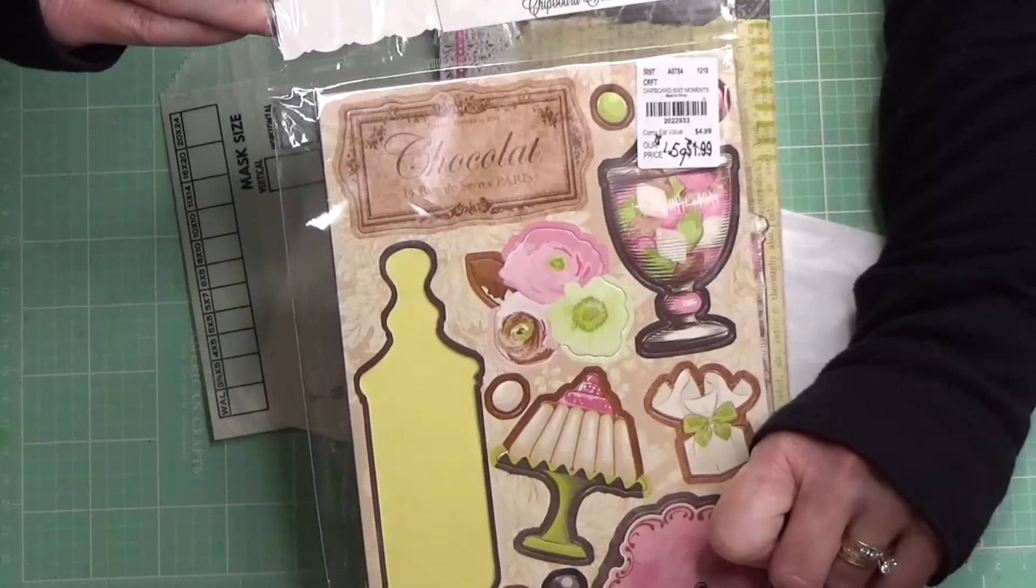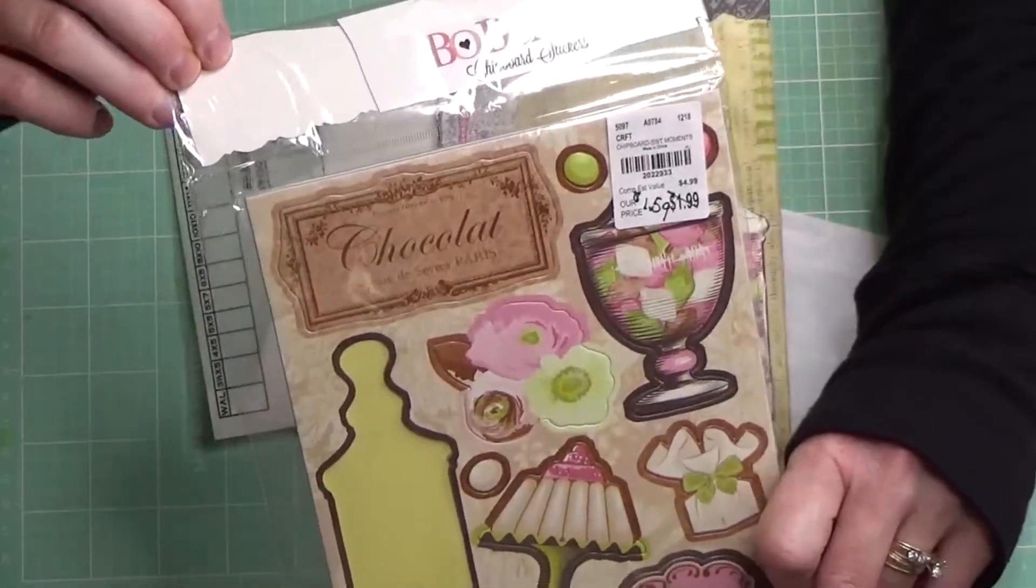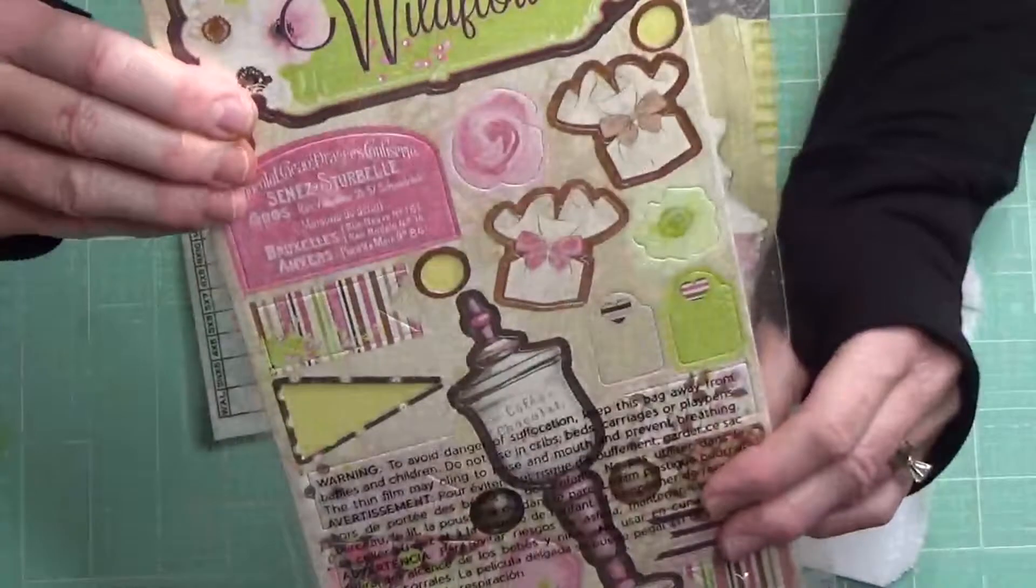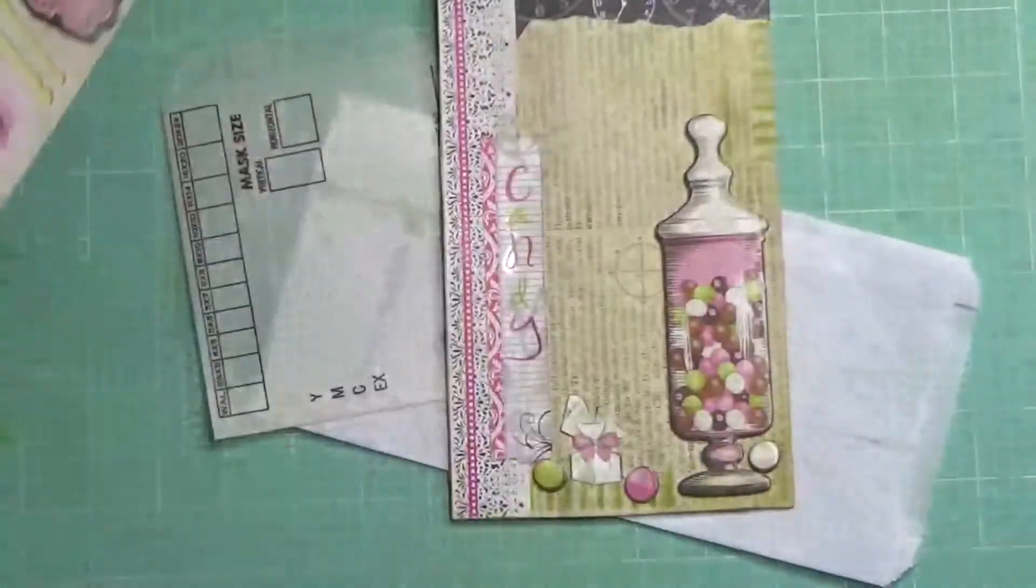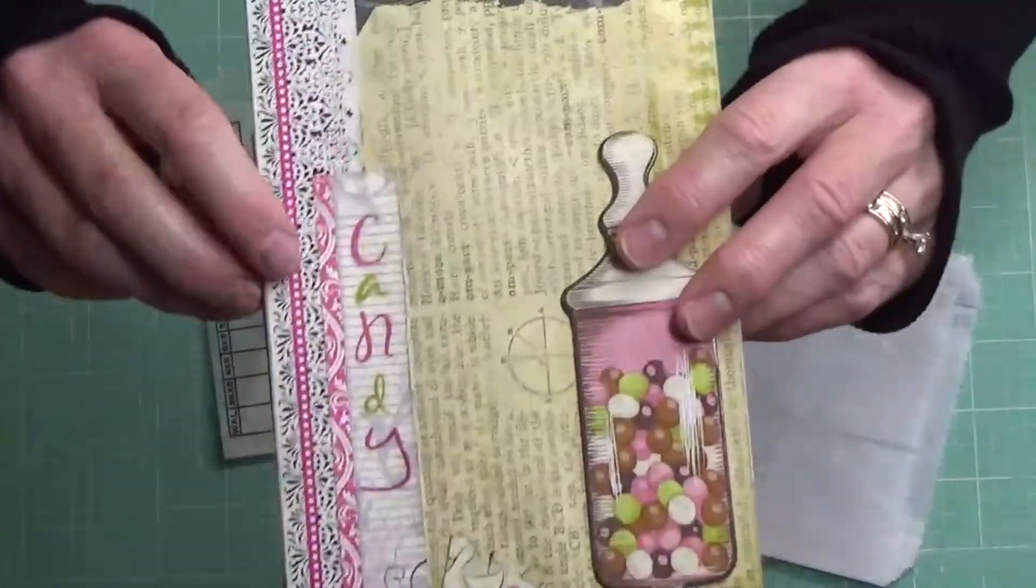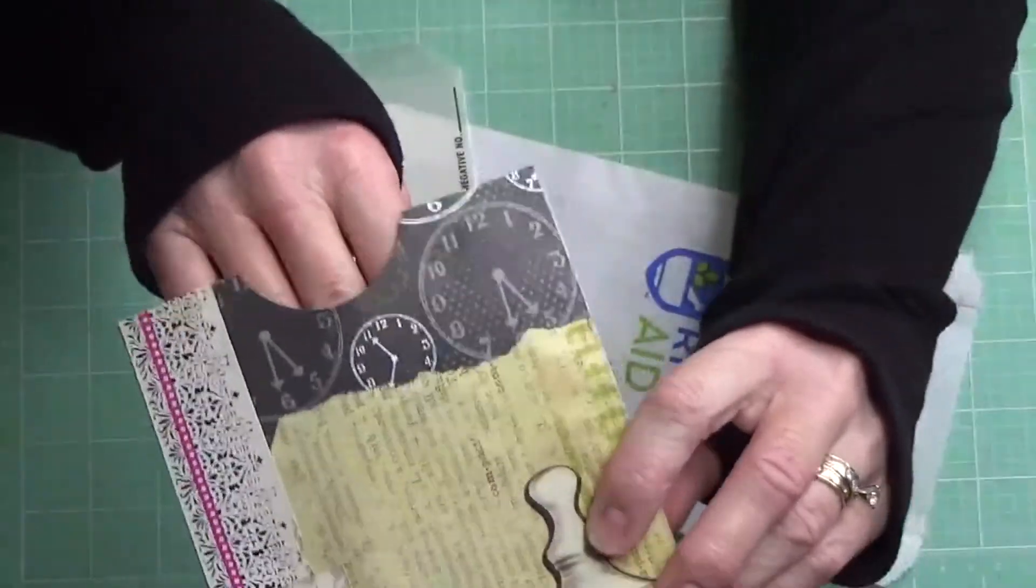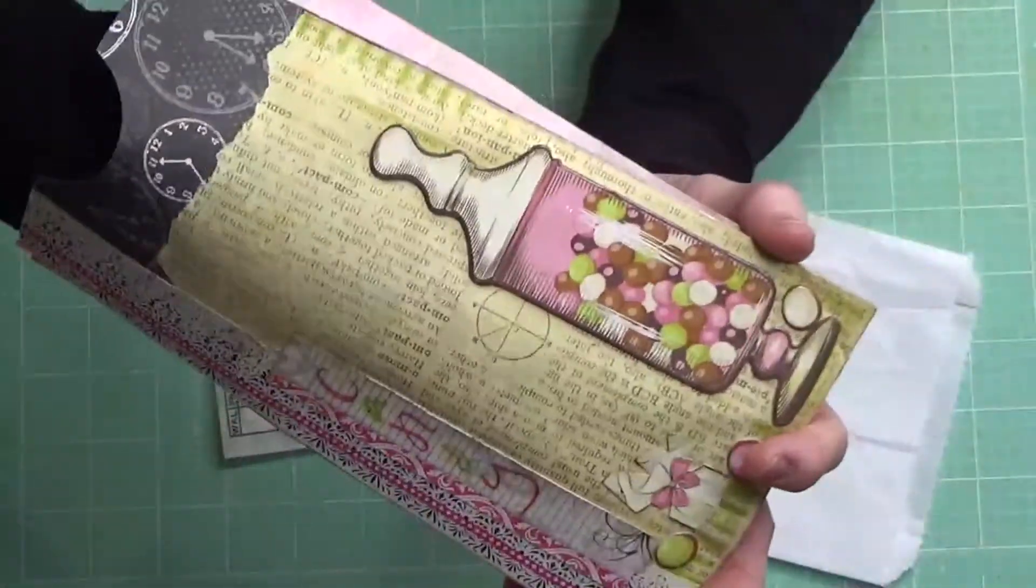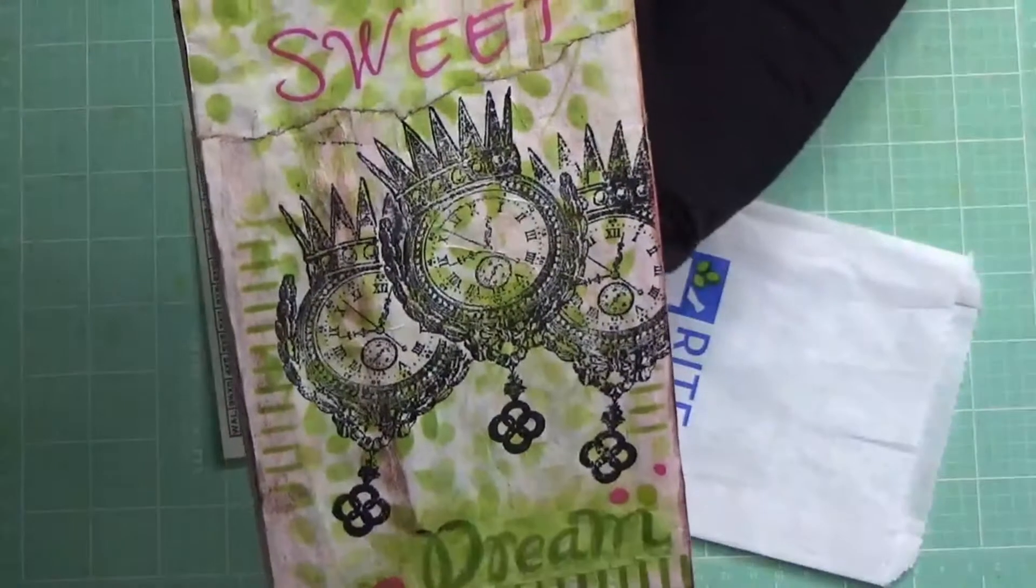This is something that I got from Tuesday Morning made by Bow Bunny. They're chipboard stickers. They're really sturdy for your different craft projects. So I used that and some coordinating paper and made this into a decorated bag. Then I did the back as well.